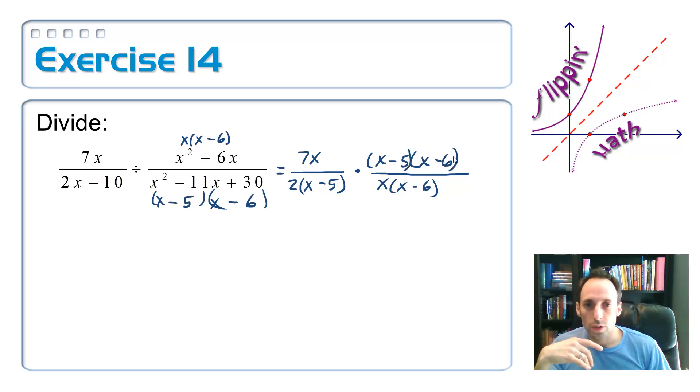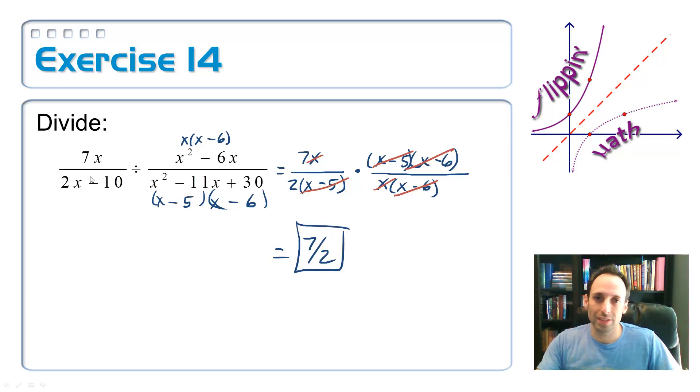These things are made so that they cancel stuff out pretty easily. And it cancels out. And it cancels out. Don't forget, there's an x right here that can cancel out with this x. And what's left over? A big fat 7 halves. And that's it. This whole thing is 7 halves. Very satisfying.